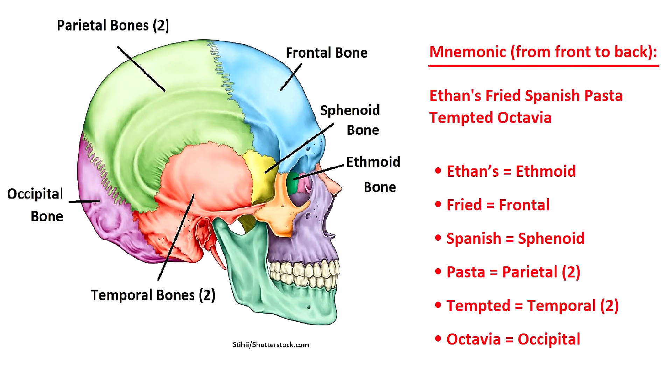Here's a quick mnemonic to help you remember the cranial bones, starting from the front and working our way to the back: 'Ethan's Fried Spanish Pasta Tempted Octavia.'